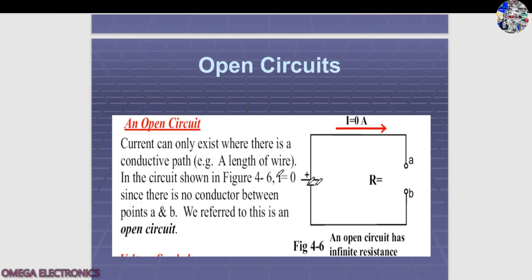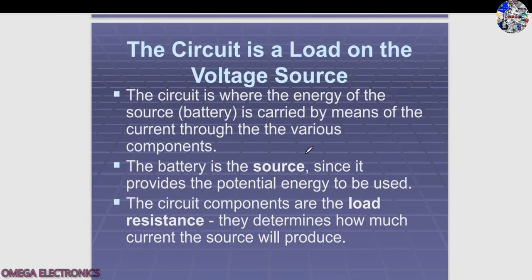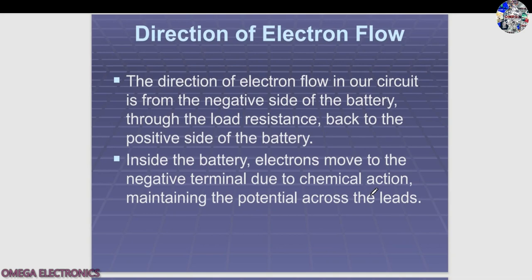In an open circuit, the current is zero because points A and B are not connected, so electrons cannot flow from B to A and electricity cannot flow. The circuit places a load on the voltage source — energy from the source is carried by current through various components. The battery is the source, providing potential energy. The load resistance determines how much current the source will produce.